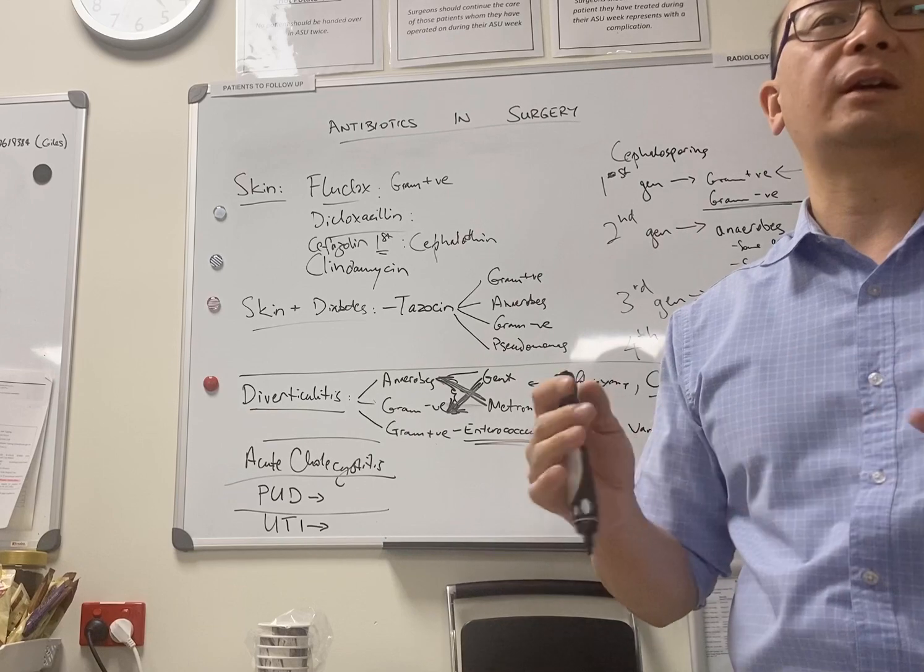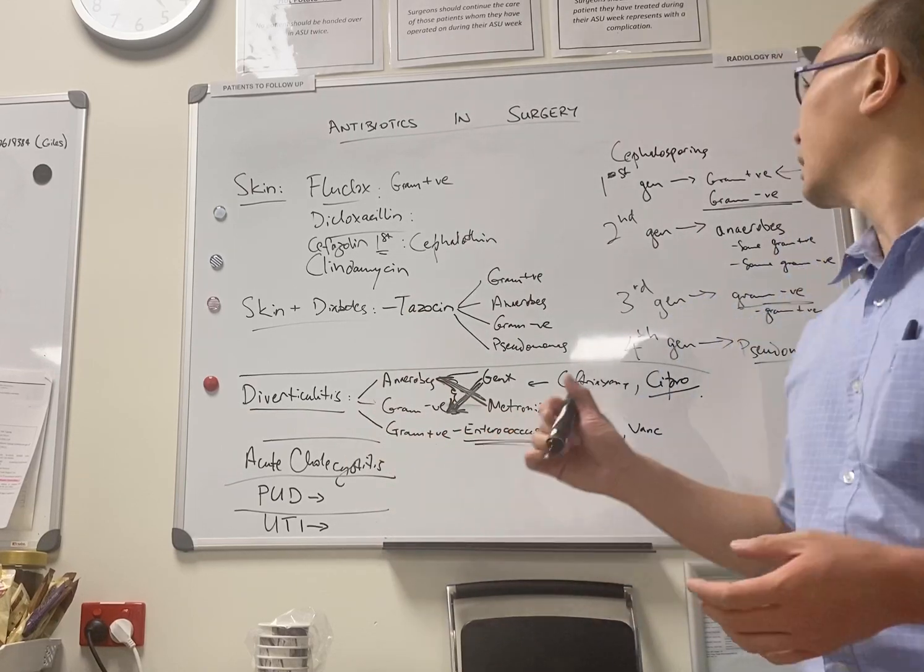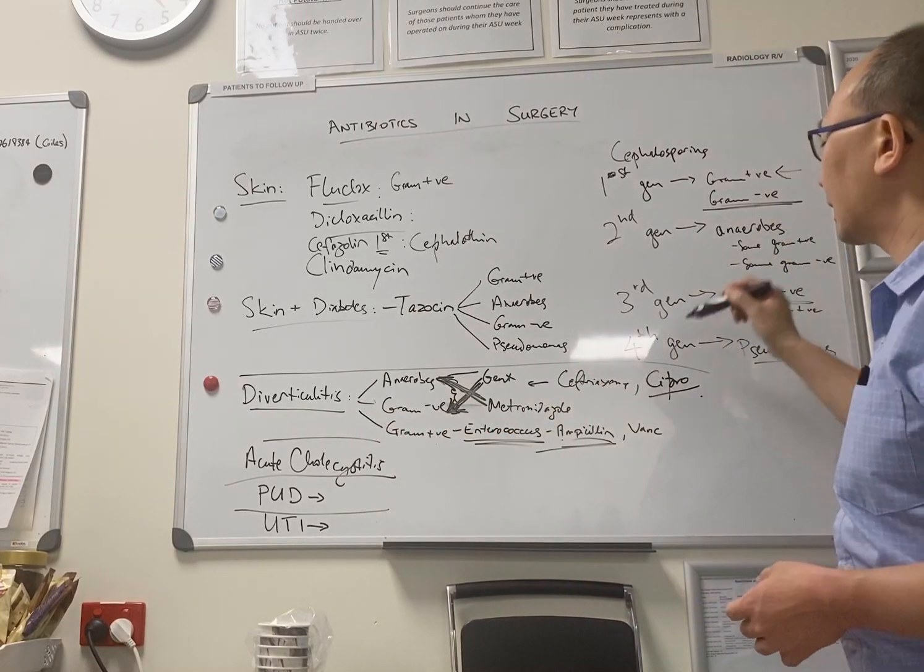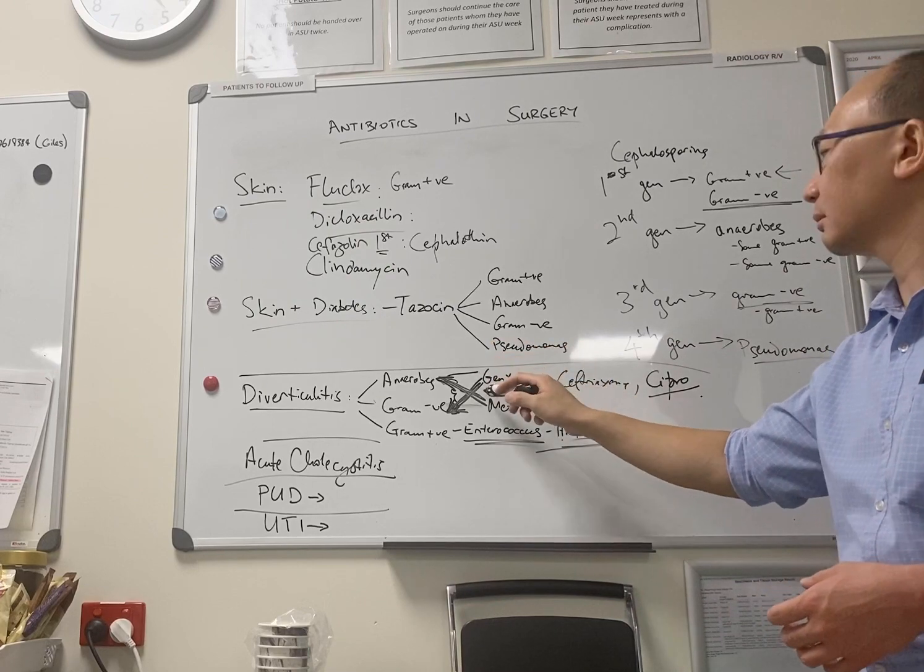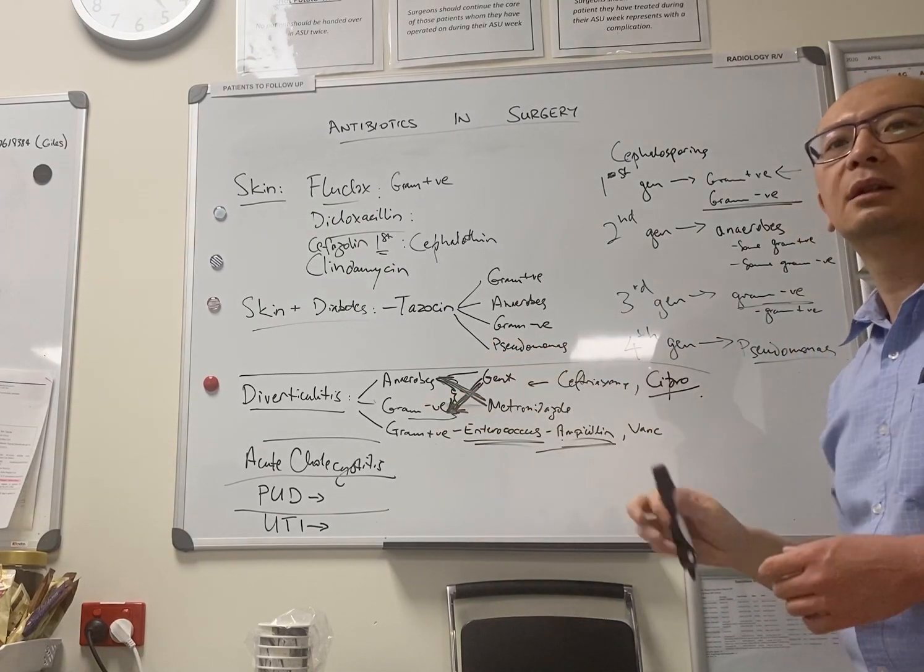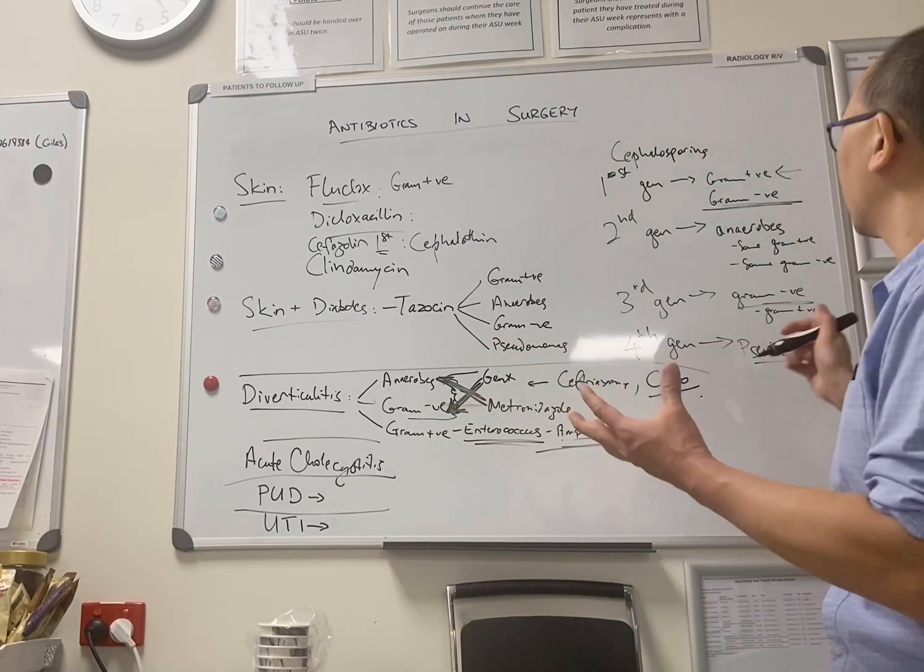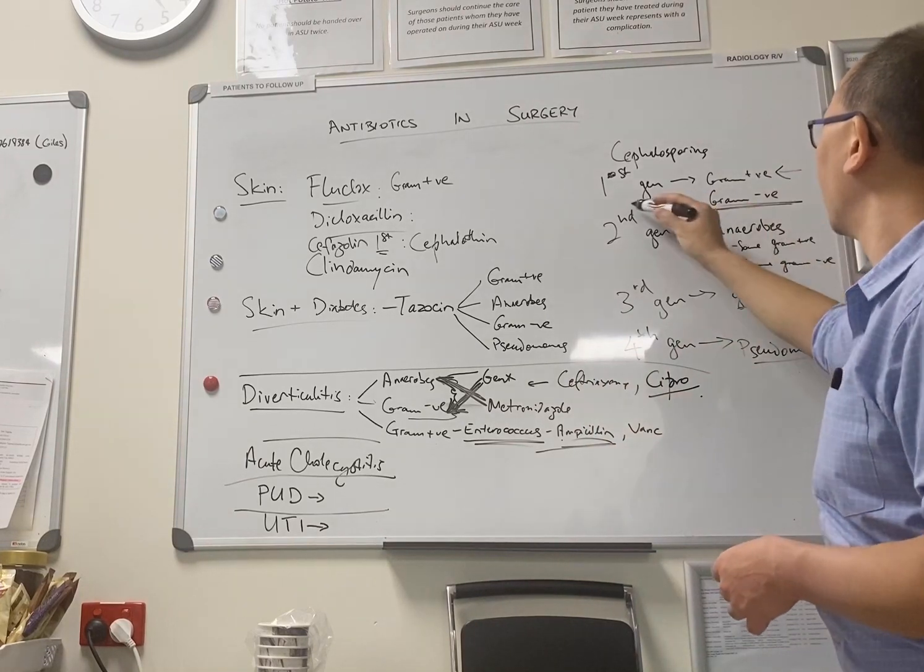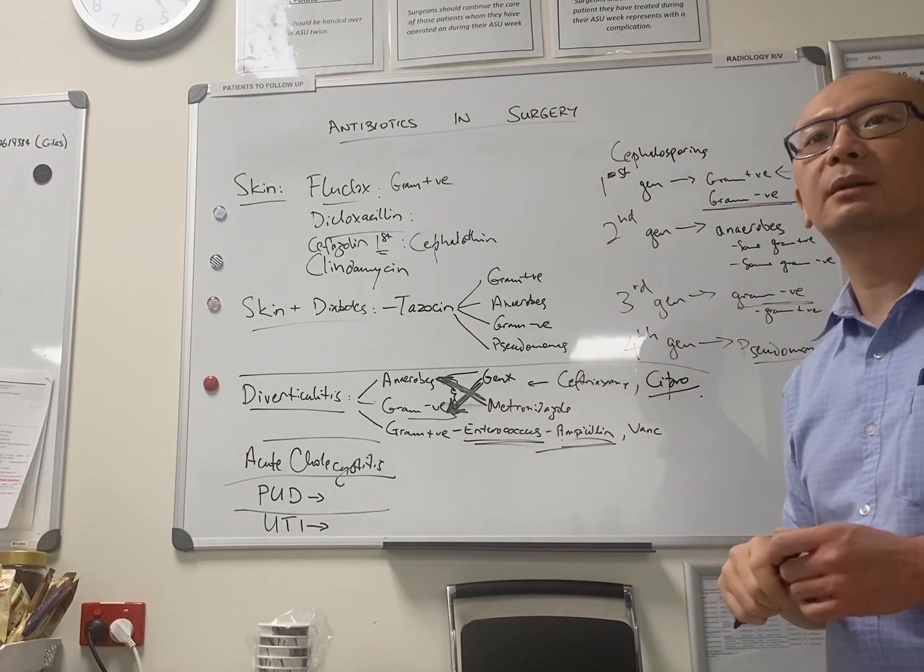If the appendix is perforated and there's widespread contamination, I probably would, in addition to that, add a proper gram-negative cover such as gent or ceftriaxone. But if it's purely prophylaxis, I'm happy with a first-gen cephalosporin plus anaerobes.